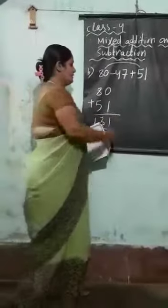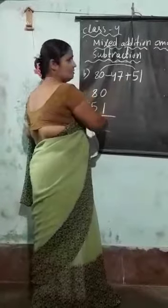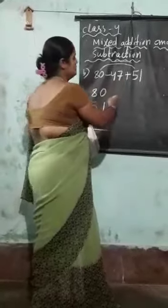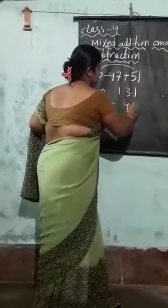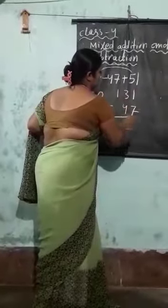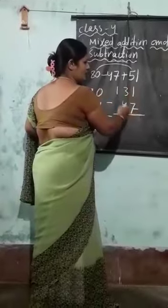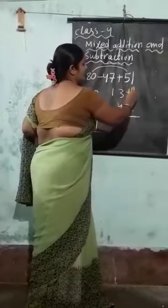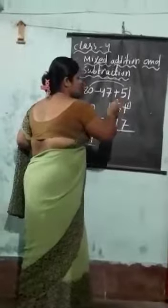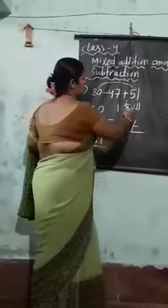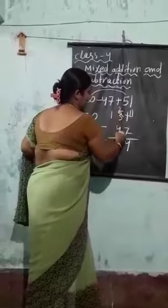Here, you will subtract 47 from 131. So, I will write 131 minus 47. As we know, from a small number we cannot subtract a big number. That's why 1 will become 11 when I ask 1 from 3 — this 3 will become 2. So, 11 minus 7 is 4, and 2 minus 4 we cannot do.